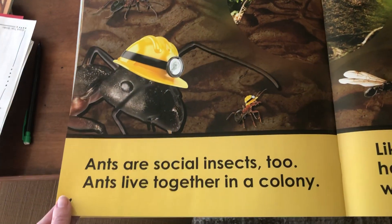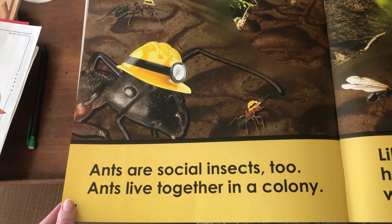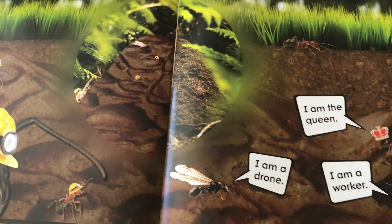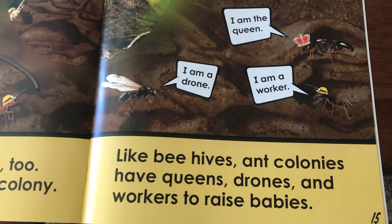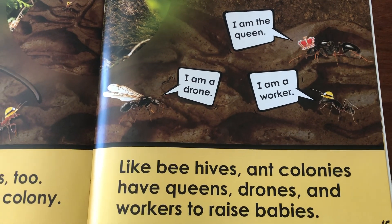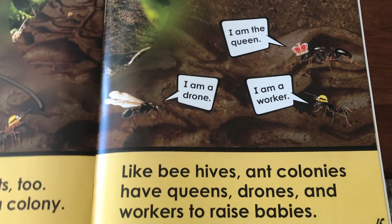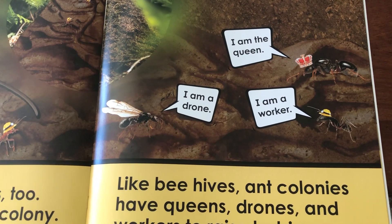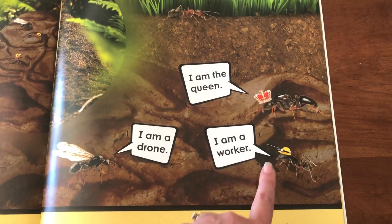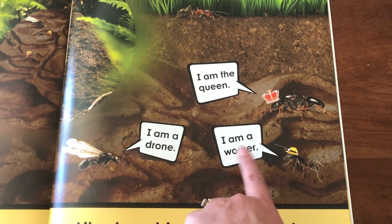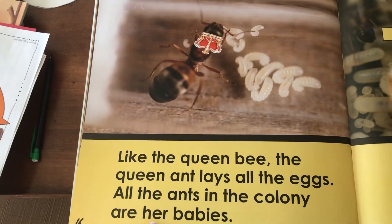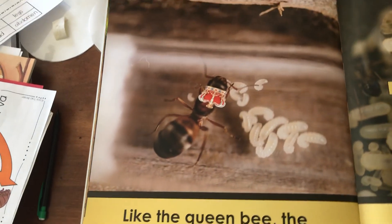Now it's going to talk about ants. Ants are social insects too. Ants live together in a colony — so their group is called a colony — and you can see here they live under the ground. Like beehives, ant colonies have queens, drones, and workers to raise their babies. So very similar: ants and bees both have different members in their group with different jobs. "I am a drone." Here's the queen: "I am the queen." And they put little hard hats on the ants to show you the workers. Like the queen bee, the queen ant lays all the eggs, and all the ants in the colony are her babies.